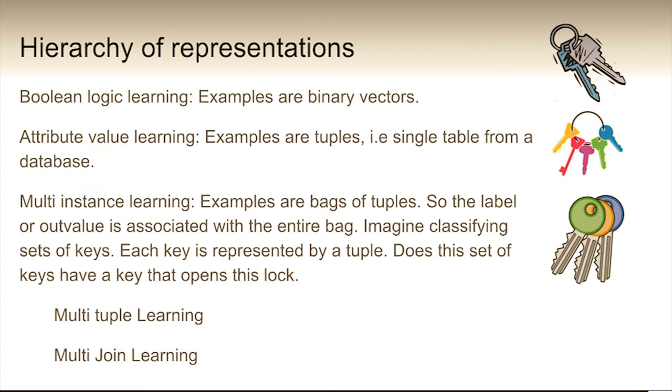Next one up in the hierarchy is multi-instance learning. So this is when you have examples of bags of tuples. So now the label is associated with the entire bag. A good example to think of is imagine classifying a set of keys. So you've got lots of different sets of keys and you want to classify the set of keys as if they would open a particular lock. Each key is represented by a tuple.